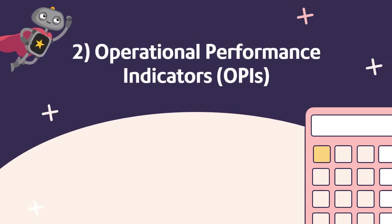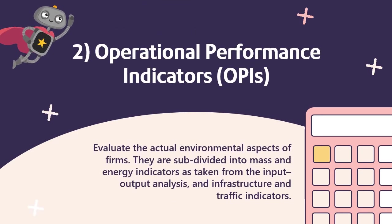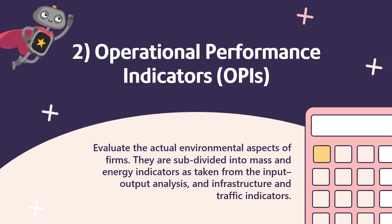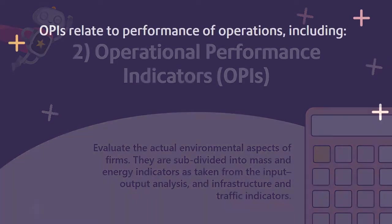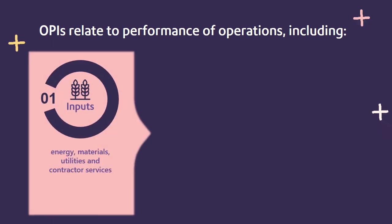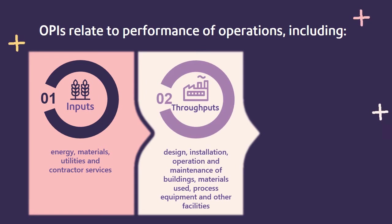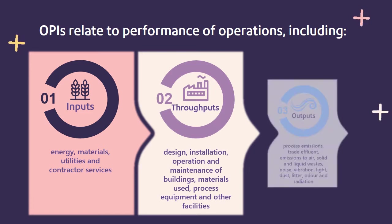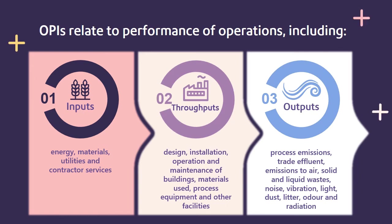Operational Performance Indicators (OPI) evaluate the actual environmental aspects of firms. They are subdivided into mass and energy indicators, as taken from input-output analysis, and infrastructure and traffic indicators. OPI relate to the performance of operations including: inputs such as energy, materials, utilities, and contractor services; throughput including design, installation, operation, and maintenance of buildings, equipment, and other facilities; and outputs such as process emissions, treated effluent, emissions to air, solid and liquid waste, noise, vibration, light, dust, litter, odor, and radiation.